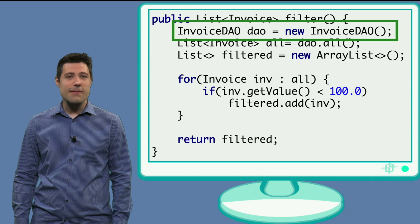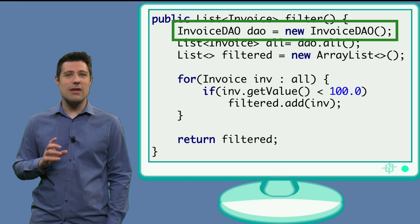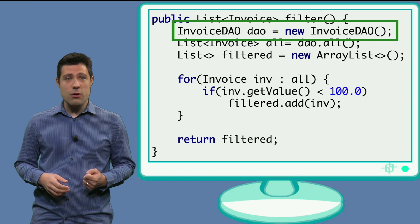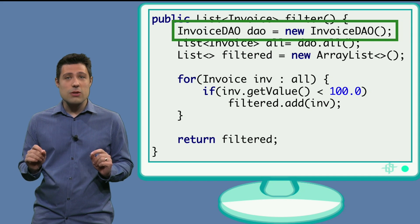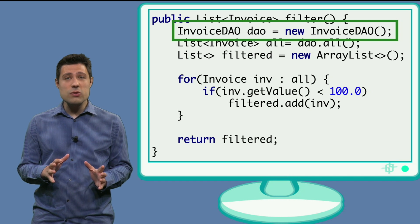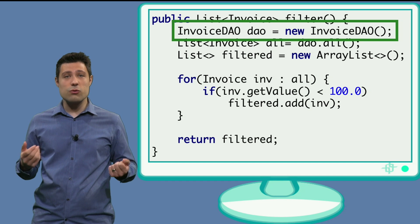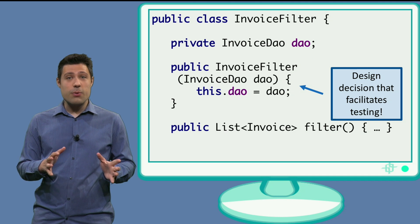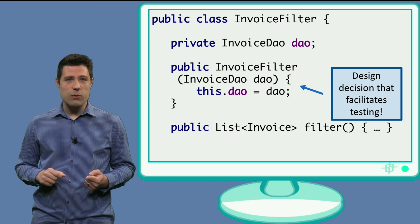Now that we know what mock objects are and how to use them, I want to focus on a design decision that we had to take so that we could use the mocks and facilitate the testing. If you remember our previous example, the InvoiceFilter class was going directly to the database to get data and then do some business logic. We decided not to use the database to test this class because it was too complex and hard to control. We decided to use mock objects, and then we saw that the production class wasn't ready to use mock objects. We had to change how it was designed.